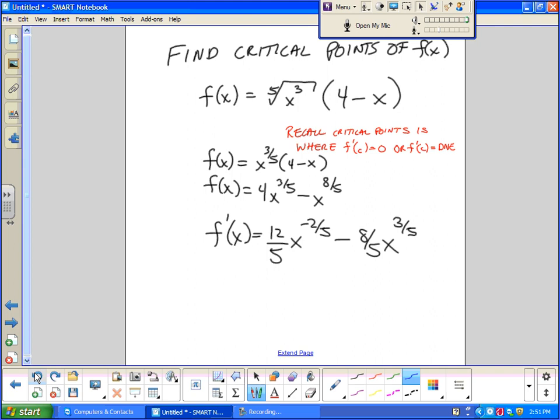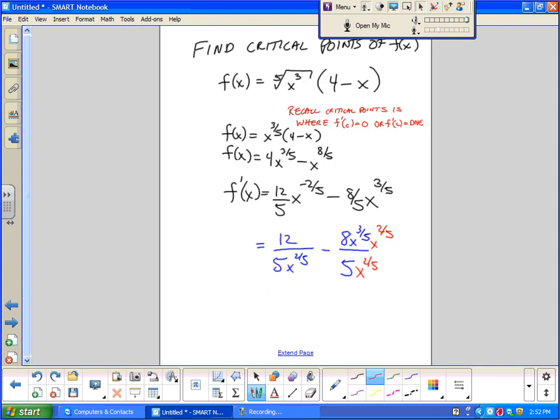So I'm going to drop this back into twelve over five times x to the two fifths minus eight x to the three fifths over five. And I look at these two terms and I say hey what's the common denominator? It's x to the two fifths times five. And so I do this on top and bottom. And you know I took this from the book now because look how pretty this works out. I get five x to the two fifths on the bottom and I get twelve minus eight x. How pretty is that?